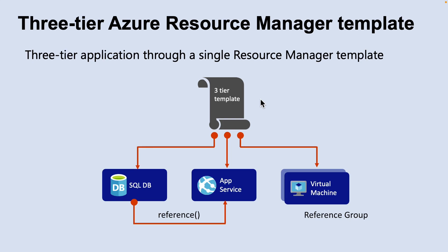Let's look at a three-tier Azure Resource Manager template. How you define templates and resource groups is entirely up to you and how you want to manage your solution. For example, you can deploy your three-tier application through a single template to a single resource group. In this example, the template includes App Service, which is associated with a SQL database, and a separate resource — a virtual machine — in the same resource group.